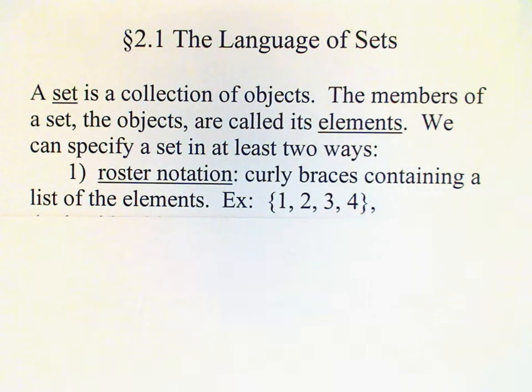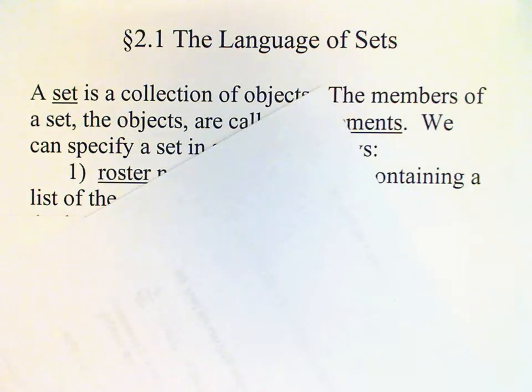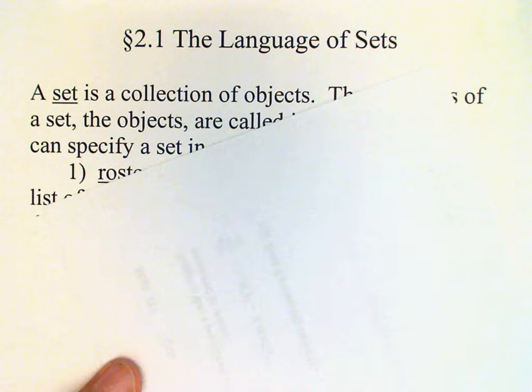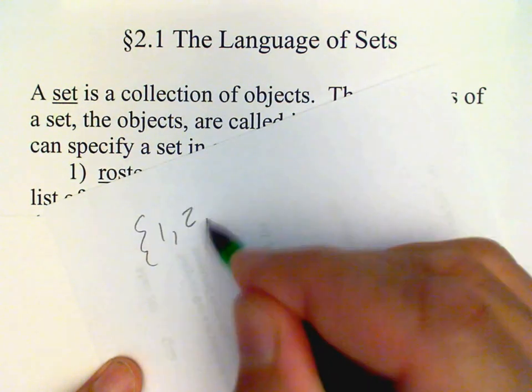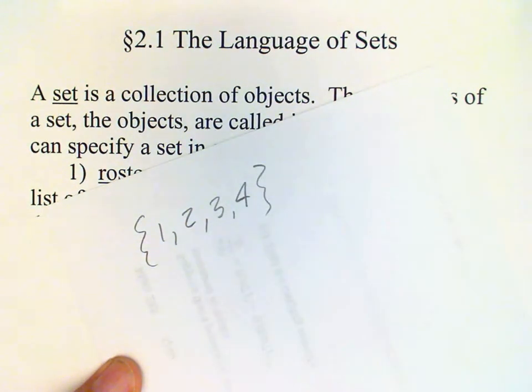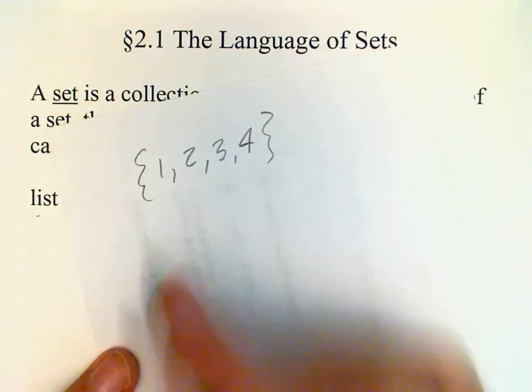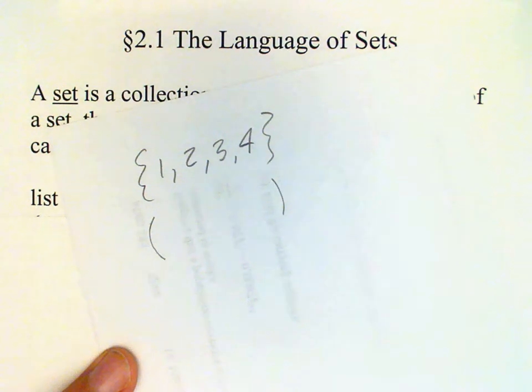Now some of you will say, well, I can't make curly braces. And if that's a problem for you, then I don't mind if you just use a squiggly line. So if you just want to write something like this, then that would be okay. But you should not use parentheses to denote a set, because in math we use parentheses for other purposes.